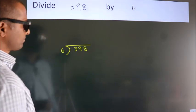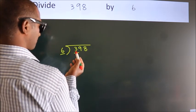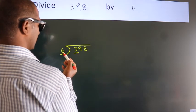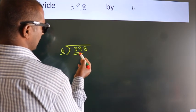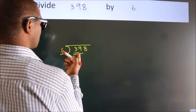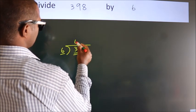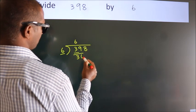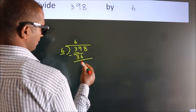Next, here we have 3, here 6. 3 is smaller than 6, so we should take two numbers: 39. A number close to 39 in the 6 table is 6×6=36. Now we should subtract. We get 3.